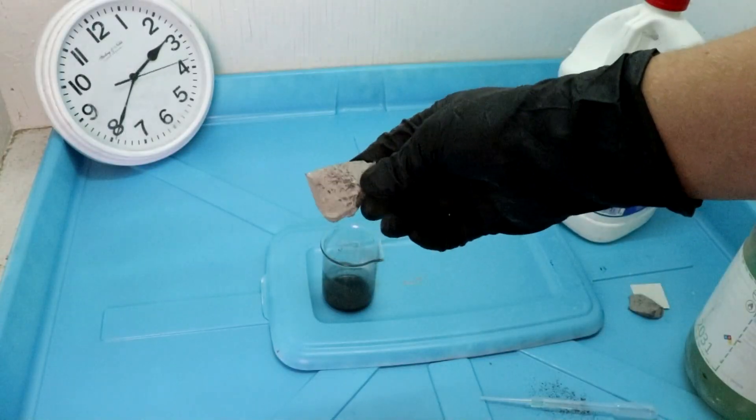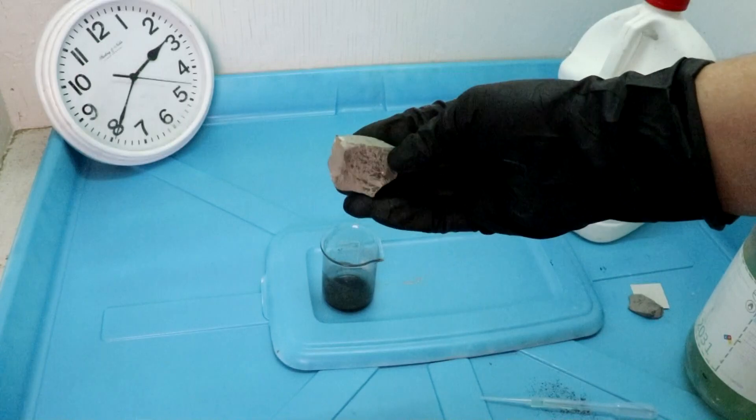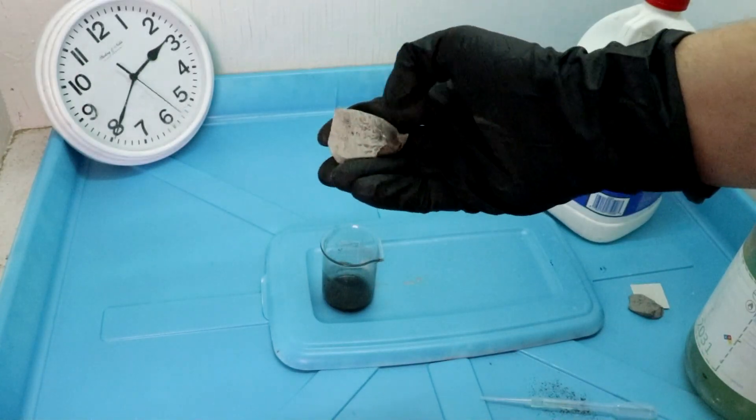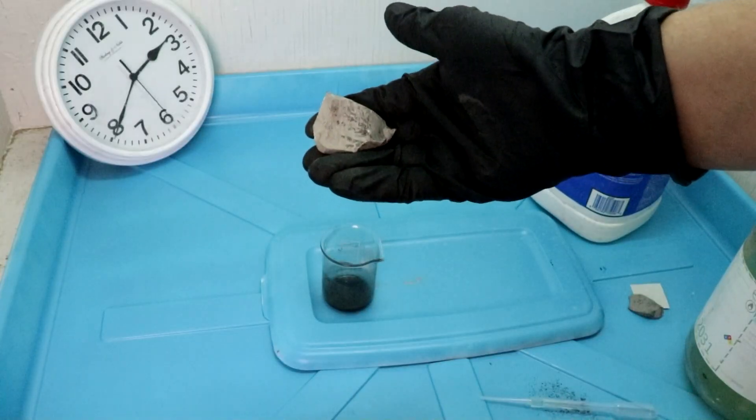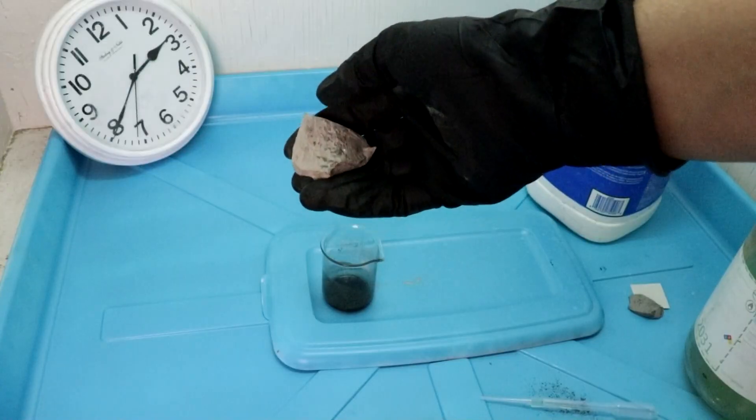Now there are many ways to combat this. One way I found is to roast the ore at high temperature, maybe 500 degrees Celsius, for a few hours. That will break down the manganese dioxide into other oxides which are not quite as oxidative.